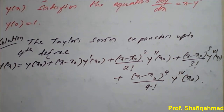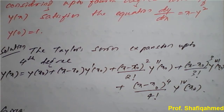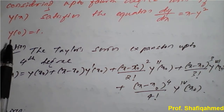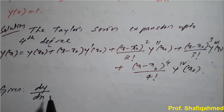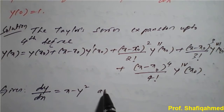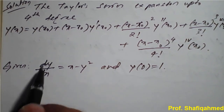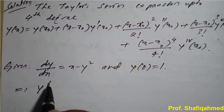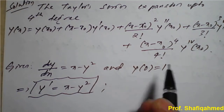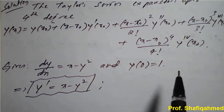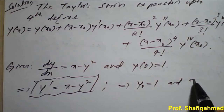Once we reach this stage, we collect the given differential equation from the question. The given differential equation is dy/dx = x - y², with initial value y(0) = 1. Therefore, y' = x - y², and we write y₀ = 1 and x₀ = 0. This is very important — the initial values of x and y.